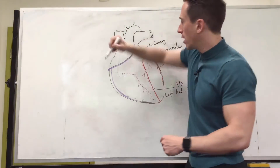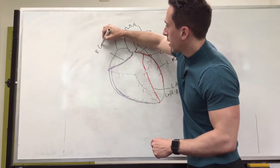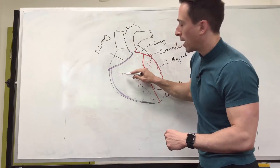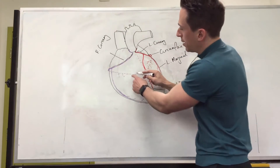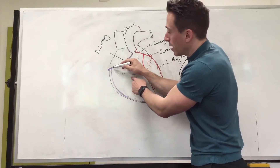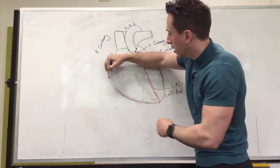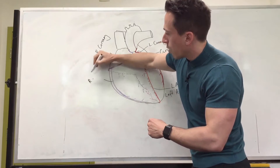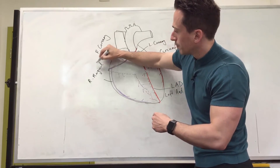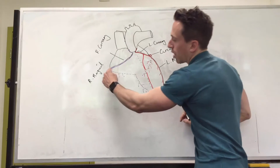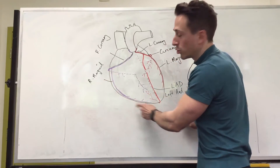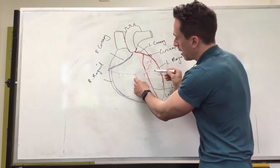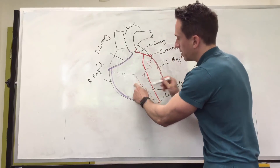Now looking at the right coronary artery — the right coronary actually flips behind the heart as well. But before it moves behind the heart, it gives off another branch: the right marginal artery. The right marginal goes down the right margin of the heart, feeding the musculature of that right margin. The right coronary then branches behind the heart, and has an important branch at the back — this is the posterior descending coronary artery, as opposed to the anterior descending.